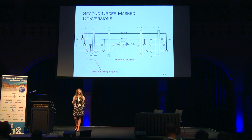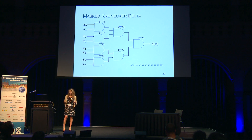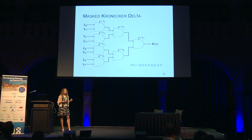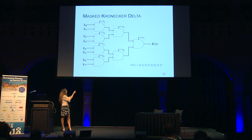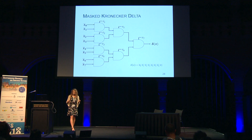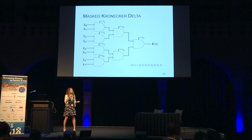Now let's look at the Kronecker delta function, which detects if our Boolean-shared input is zero. We implement it with a tree of two-input AND gates, replacing each AND gate with a first- or second-order secure multiplication gadget. Counting inputs for first order: eight inputs each in two shares gives 16 bits, plus seven bits of fresh randomness in the AND gates, totaling 23 bits of input — for only two bits of output. That's expensive, so we should be able to recycle the randomness.